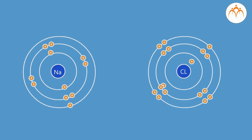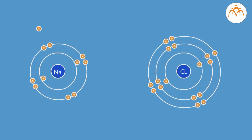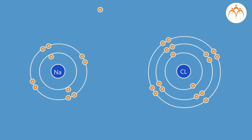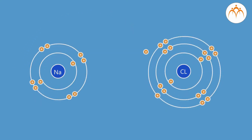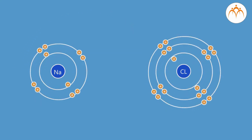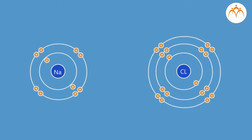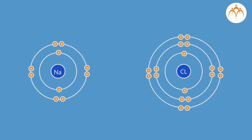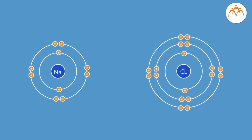Alternatively, Na donates one electron to reach 2, 8, and Cl accepts one electron to reach 2, 8, 8, forming NaCl. So both sodium and chlorine have a valency of one. As the second case is easier, this is how the compound NaCl is formed in nature.